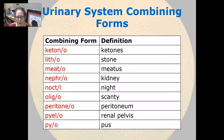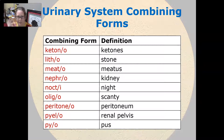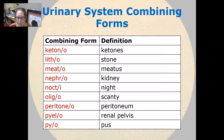Meato is meatus. Nephro is kidney. Nocti — note this is one of the ones that has an 'i' instead of an 'o' — nocti is night. Oligo is scanty. Peritoneo is peritoneum. Pyelo is renal pelvis. Pio is pus.